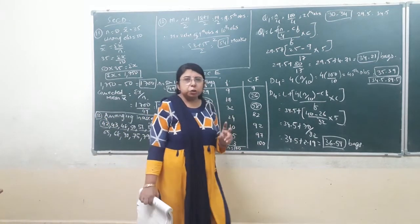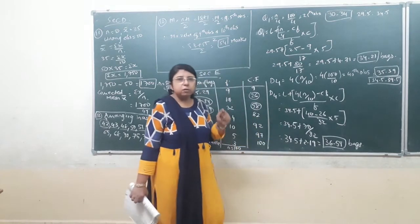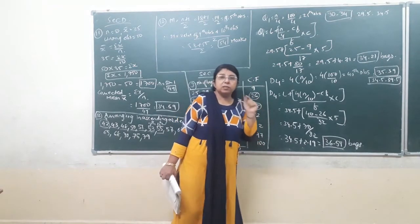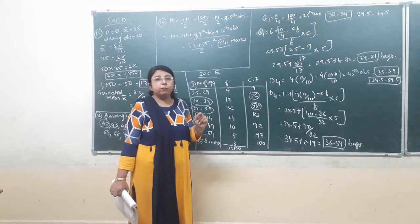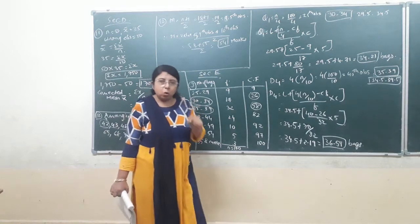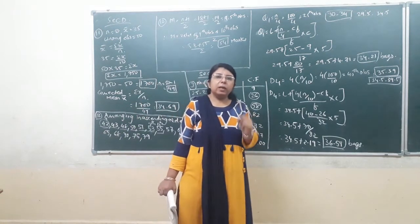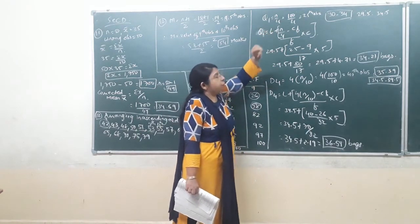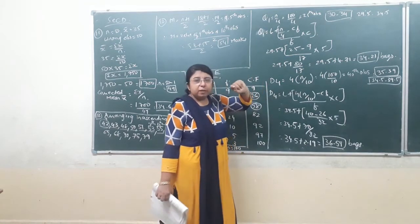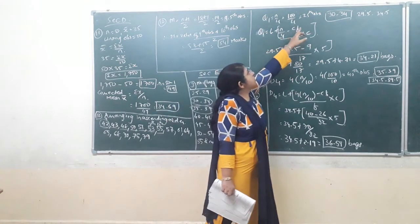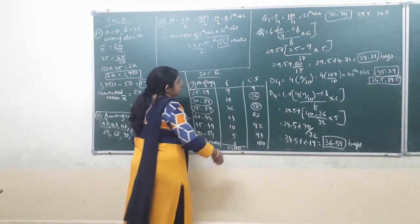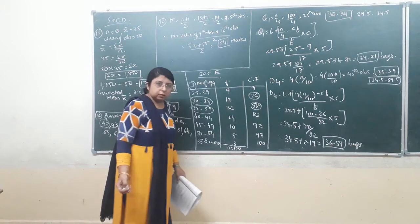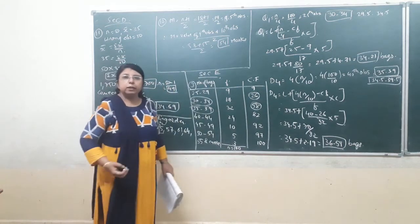Two things I have to find from the question, that is Q1 and D4. So first let us do the calculation for Q1. Q1 — there is continuous frequency distribution, so we have to apply the formula that is N by 4, not N plus 1 by 4. For raw data only we apply the formula N plus 1 by 4. In case of continuous distribution, the formula would be N by 4. The value of N is 100, so 100 divided by 4 is equal to the 25th observation. The 25th observation would be coming in CF 26, so the quartile class is 30 to 34.